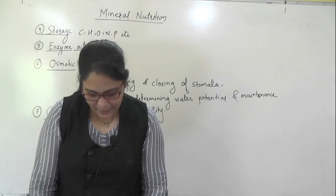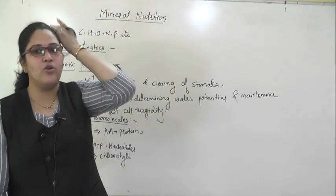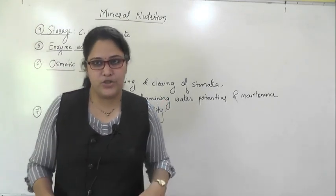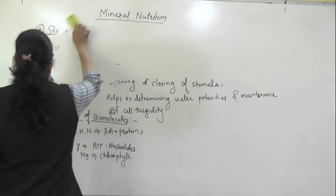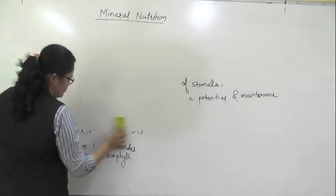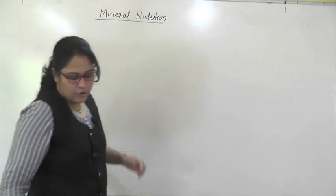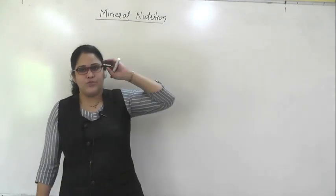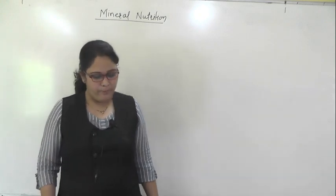Now we will start the next part: the role of elements in plant growth. We will skip carbon, hydrogen, and oxygen since they are general elements required everywhere. Except those three, we will study the remaining 14 nutrients. First we will see the role of macro elements. We need to prepare a table with columns for: mineral name, absorbable form, which plant part requires it, physiological role, and deficiency symptoms.